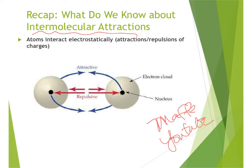All intermolecular attractions, as well as all chemical bonds, are electrostatic attractions. Electrostatic means there are charges — some type of charge development within the particle, atom, or compound. If those charges are different, they result in attraction; if they're the same, they result in repulsion. One of the more common intermolecular attractions is due to negatively charged electrons in one atom being attracted to the positively charged protons in another atom.